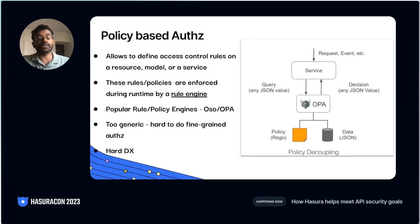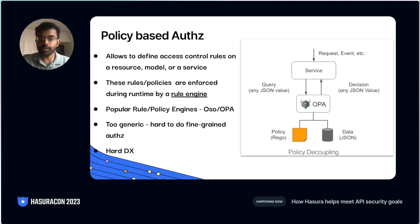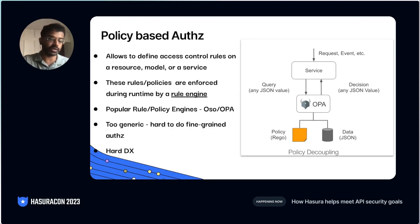Let's look at policy-based authorization, which tries to separate authorization from your actual code. These are usually implemented by a rule engine, which is a separate service. A few popular policy engines are OPA — Open Policy Agent. The problem with these solutions is they can be a little generic for your application's needs. To do fine-grained authorization, you'll really have to work hard to implement a rule that works for your application. The developer experience is also hard here — not only might you have to do fine-grained authorization, but it's also very separate from your core business logic. It's a different service, so it can be quite complicated.